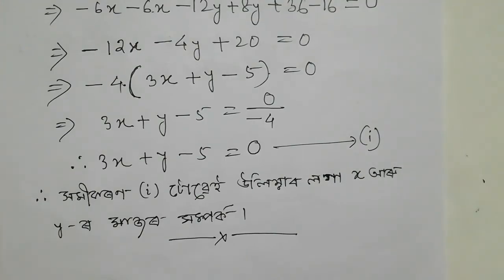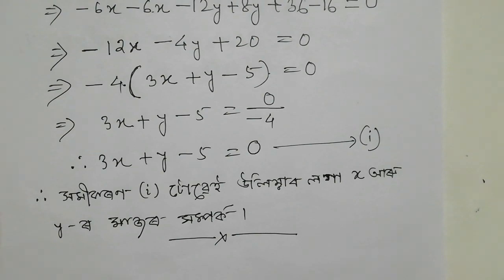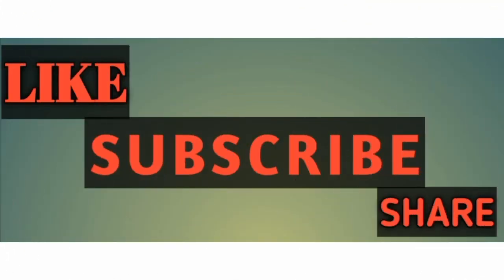So I will apply 3x plus y minus 5 equals 0. So this is the final answer for question number 9. We have applied the distance formula on points, found the equation, and the solution for question number 9 is complete. I hope you watched this video carefully and understood the solution.